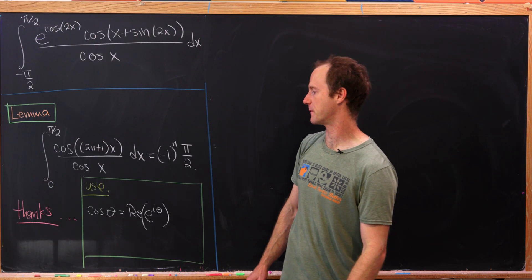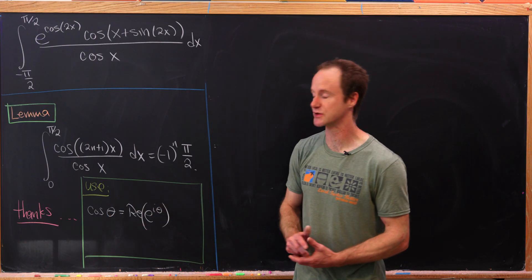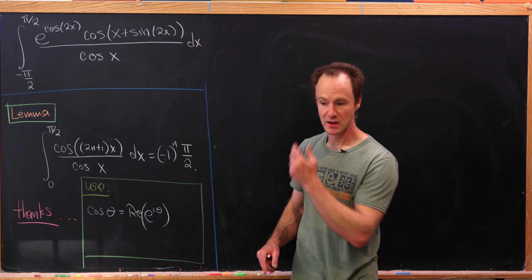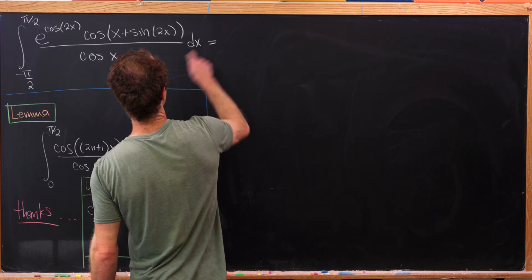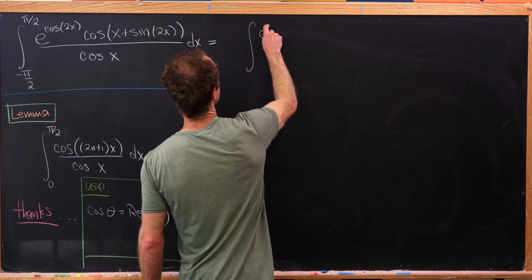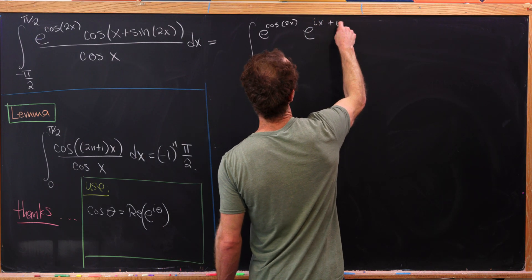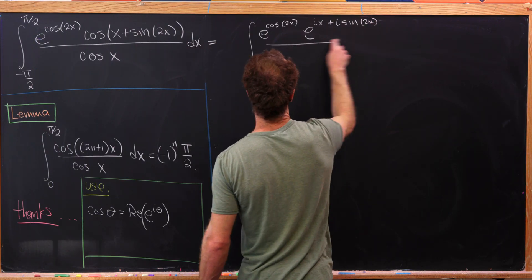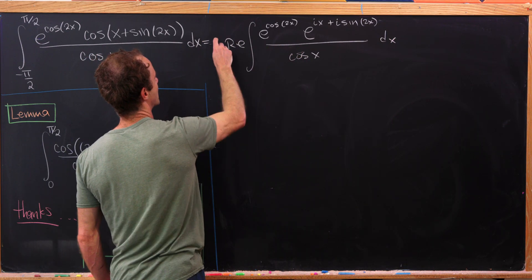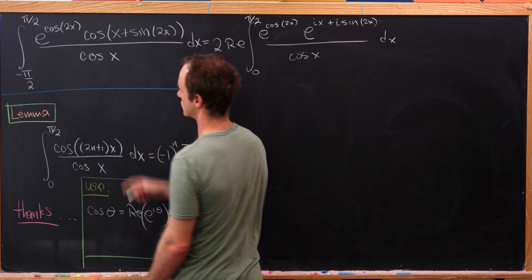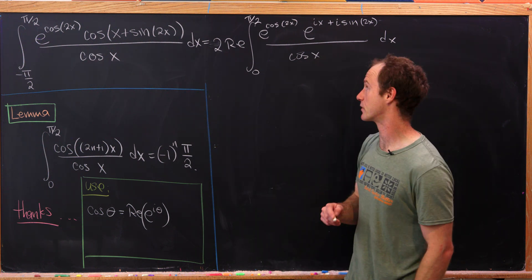Now we're ready to finish the main integral, and it will go quickly from here. We use the tool of expressing the cosine of an angle as the real part of e to the i theta. We apply this to cosine of x plus sine 2x, rewriting the integral as the real part of the integral from 0 to pi halves — changing bounds due to the even function — of 2 times e to the ix times e to the i sine 2x over cosine x dx.